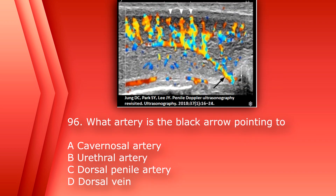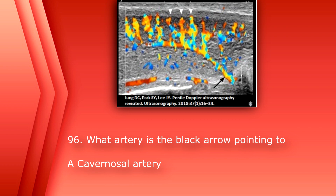Number 96: what artery is the black arrow pointing to? A. Cavernosal artery. B. Urethral artery. C. Dorsal penile artery. Or D. Dorsal vein. The answer is A. Cavernosal artery.